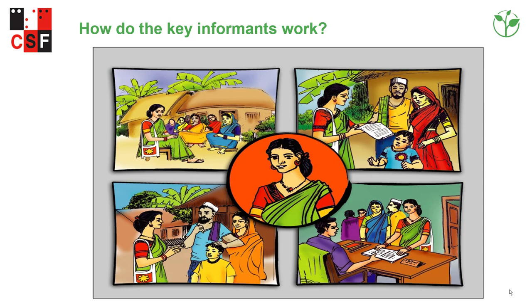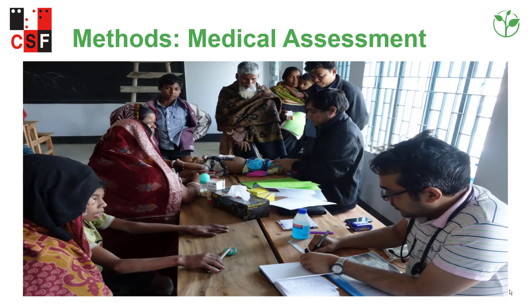Trained key informants collect a list from the community, provide the list to the community mobilizer or assigned person, and invite parents to bring their children to a fixed venue for medical assessment. Key informants also work during and post-service follow-up.